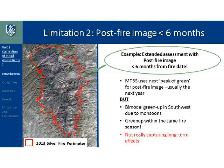Another limitation is specific to the Southwest. MTBS uses the next peak of green as a guide for when to acquire the post-fire image. The Southwest experiences a dual green-up — one in late summer or early spring, and another after monsoon rains. This means a post-fire image could be acquired within the same season as the fire, which wouldn't really capture long-term effects. For example, the Silver Fire is classified as an extended assessment, but its post-fire image is less than six months from the fire date — so it's not really showing long-term effects.